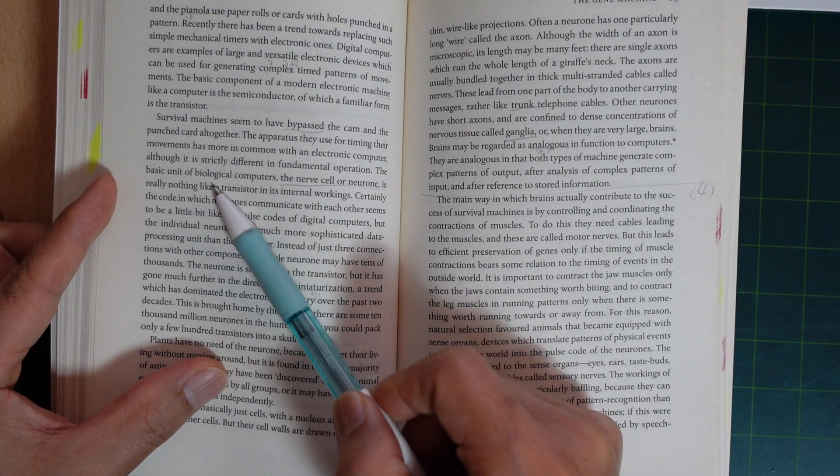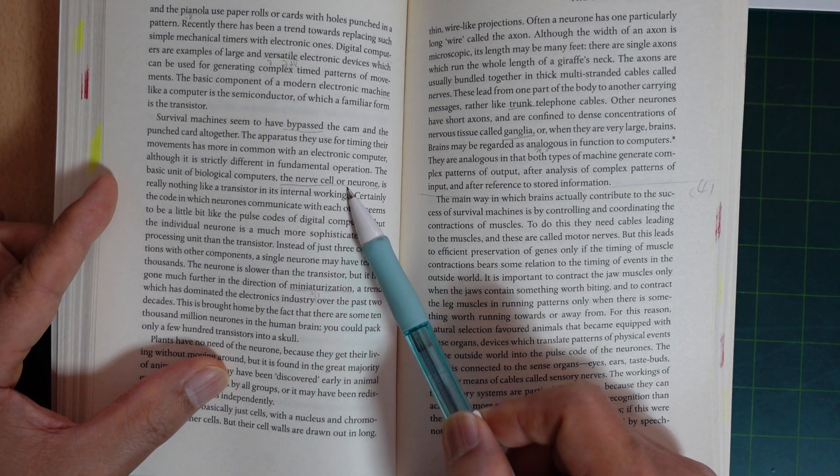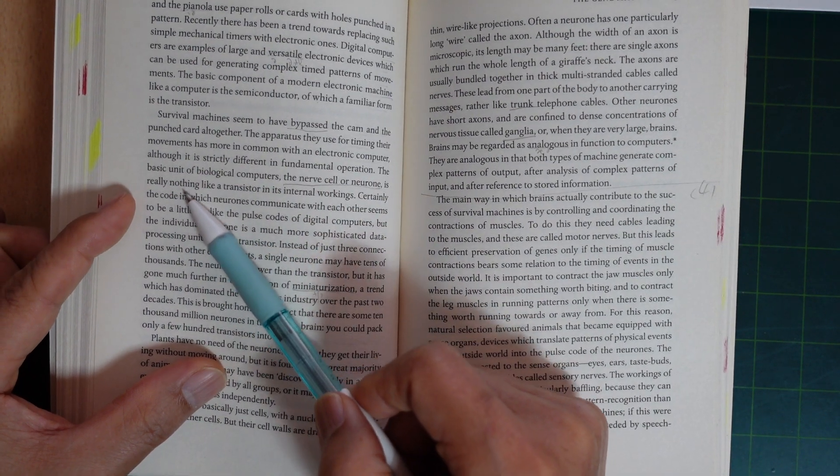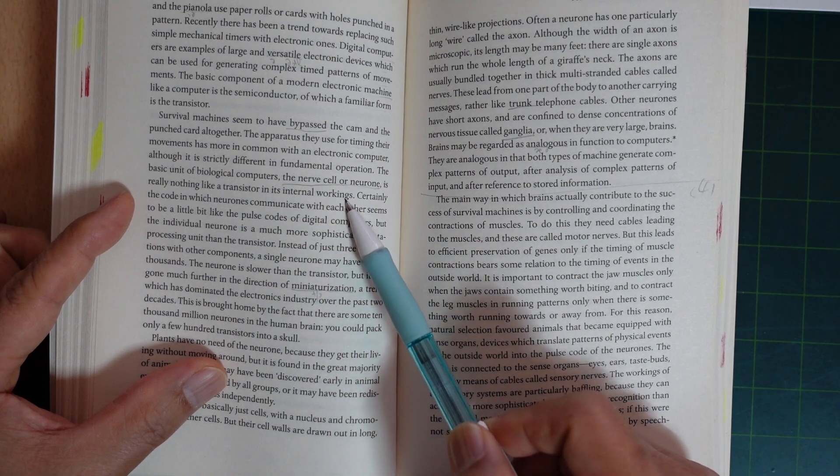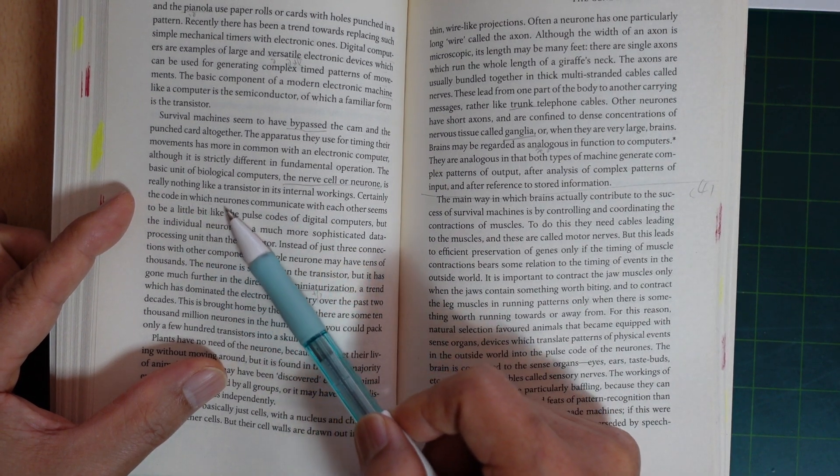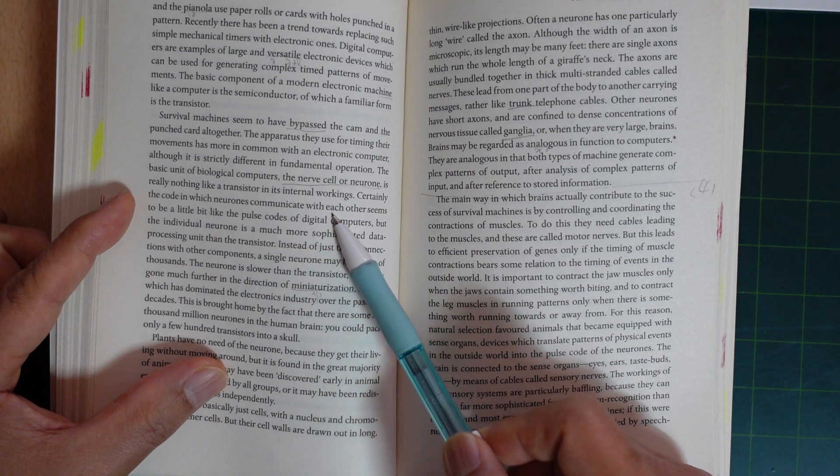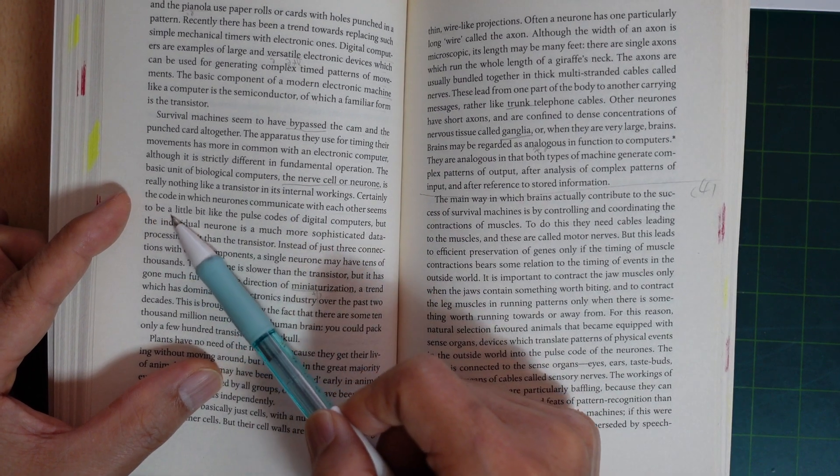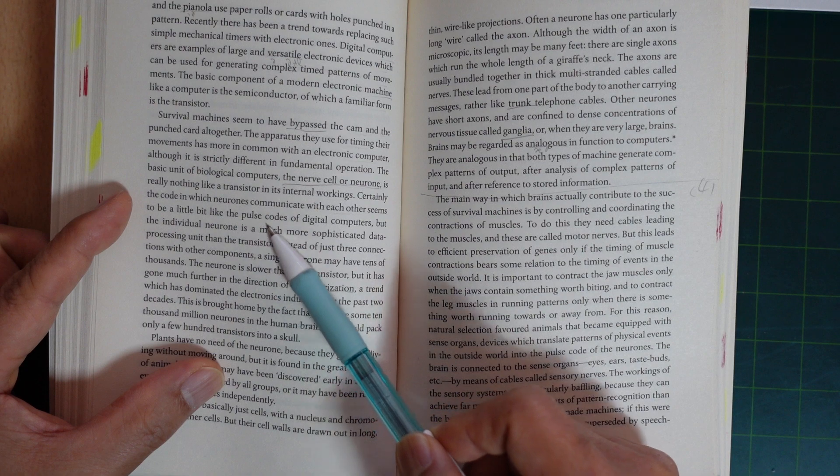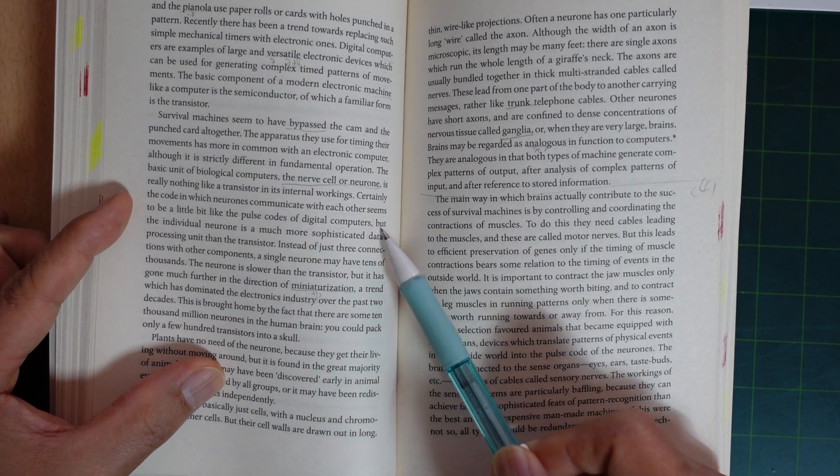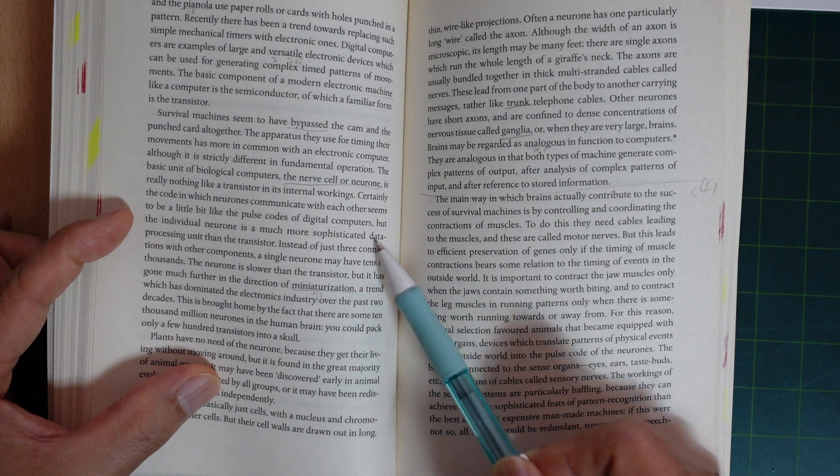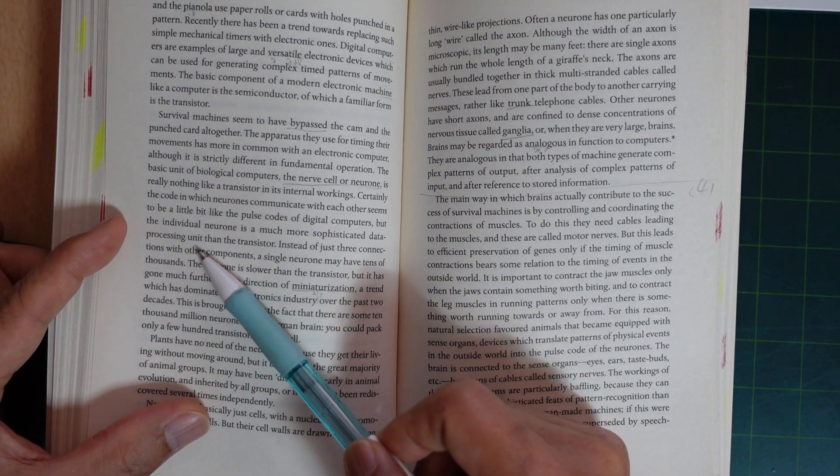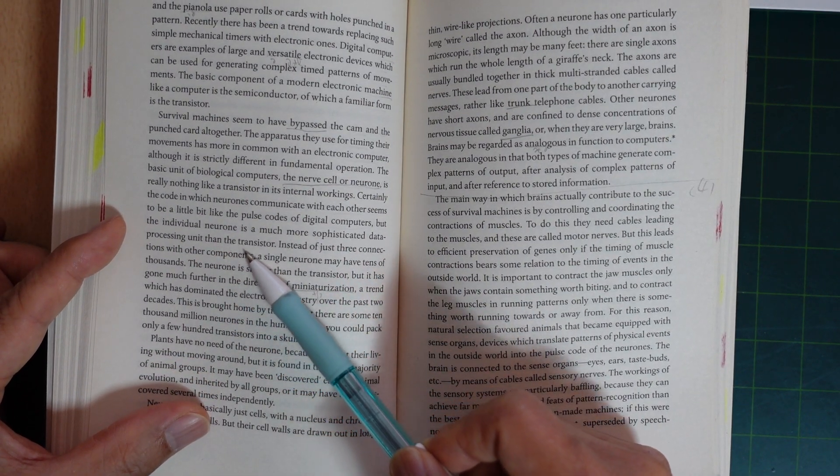The basic unit of biological computers, the nerve cell or neuron, is really nothing like a transistor in its internal workings. Certainly, the code in which neurons communicate with each other seems to be a little bit like the pulse codes of digital computers. But the individual neuron is a much more sophisticated data processing unit than the transistor.